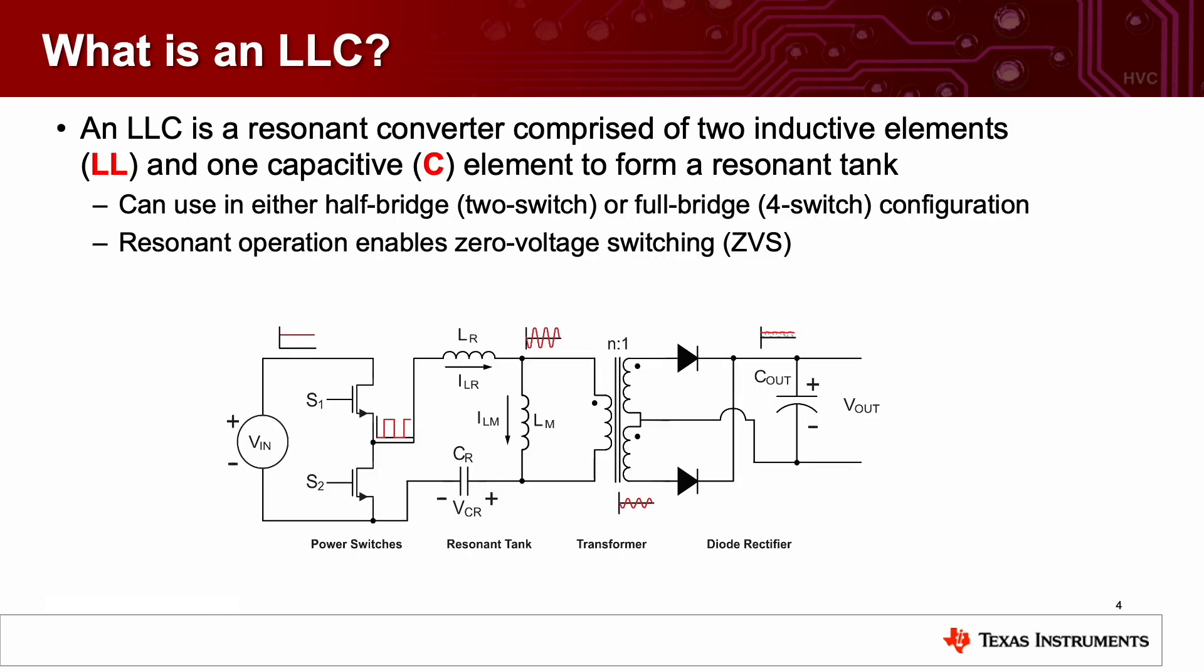So what is an LLC? An LLC is a resonant converter topology which is comprised of two inductive elements, which is your LL, and one capacitive element, which is your C. These form a resonant tank. You can use this in either a half bridge, two switch application, or full bridge, which is four switches. Resonant operation helps to achieve zero voltage switching.